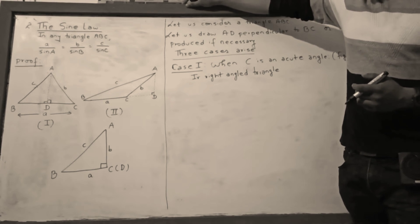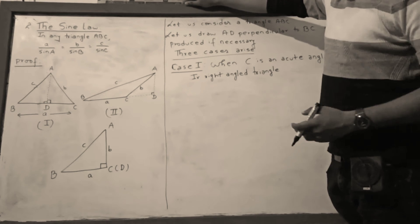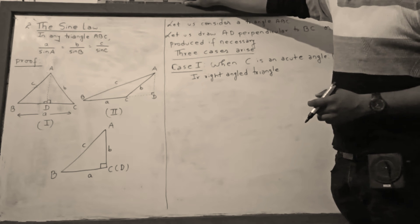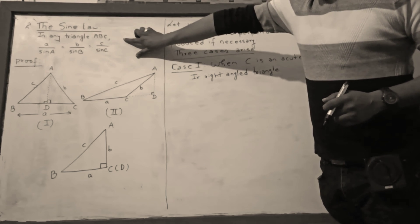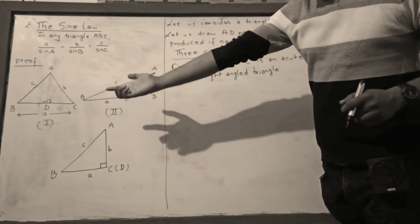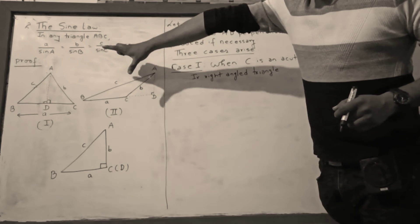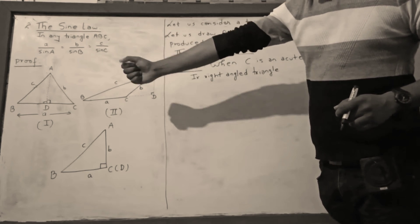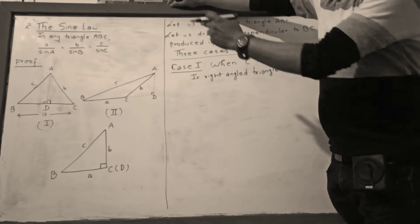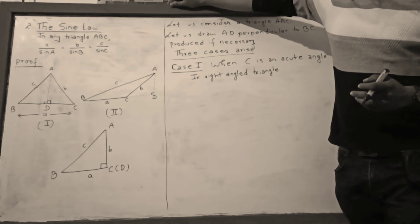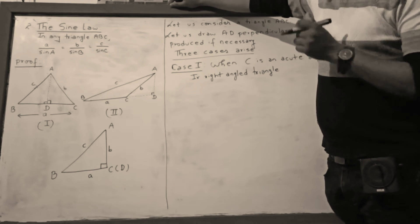Sine law states that in any triangle ABC, a upon sin A is equal to b upon sin B is equal to c upon sin C, where small a is the length of side BC, small b is the length of side AC, and small c is the length of side AB. Capital A, capital B, and capital C denote the respective angles.